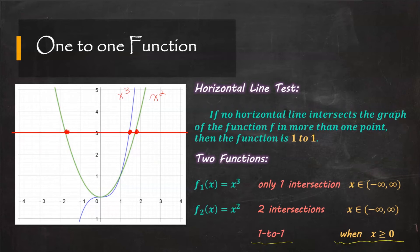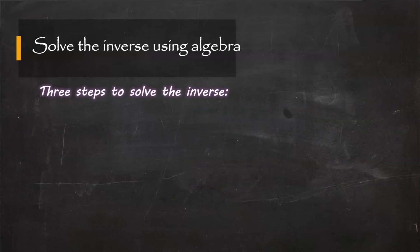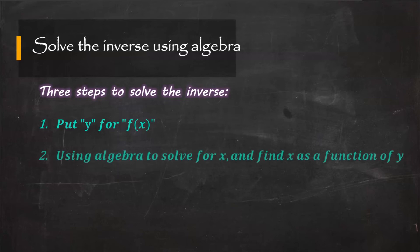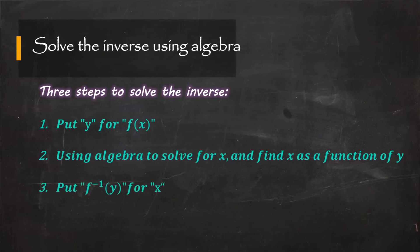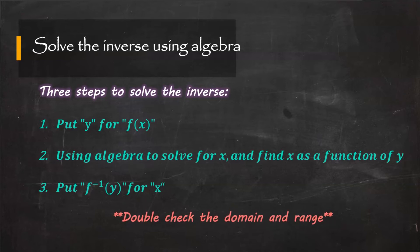Now we can move on to solving the inverse using algebra. There are three steps: first, put y for f(x); second, use algebra to solve for x and find x as a function of y; third, replace x by f⁻¹(y). Don't forget to double-check the domain and range of both the inverse function and the original function, since they should satisfy the properties of a 1-to-1 function.